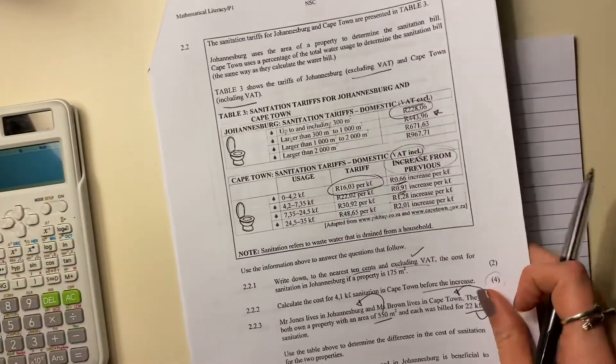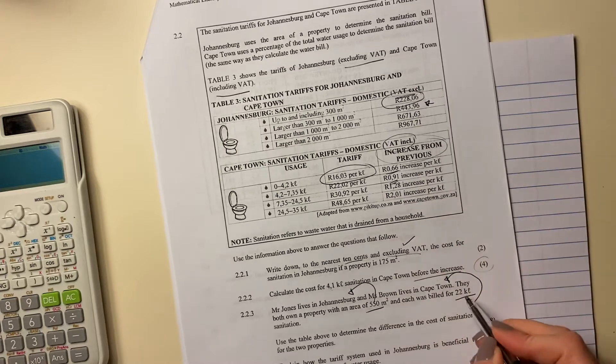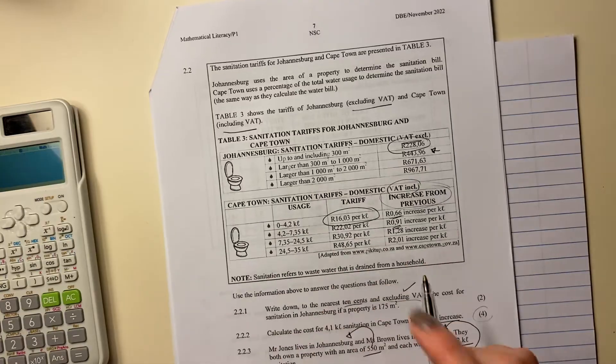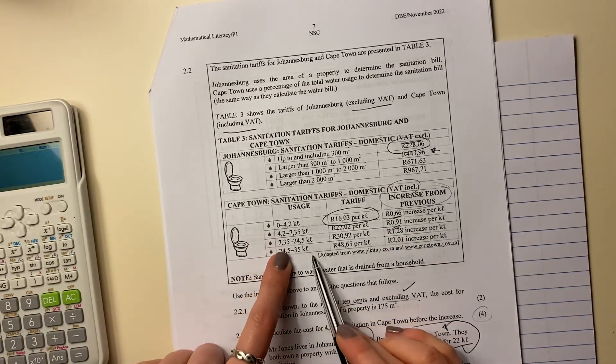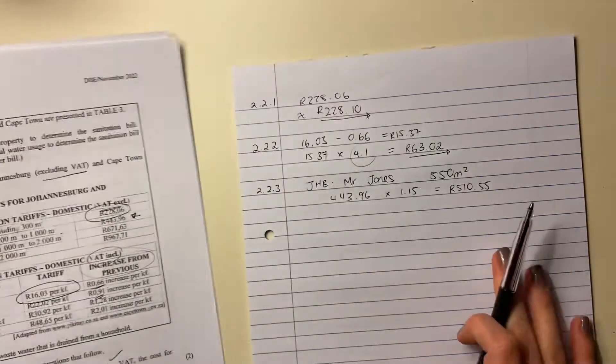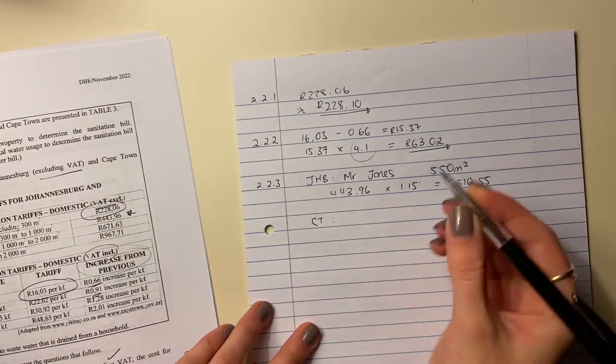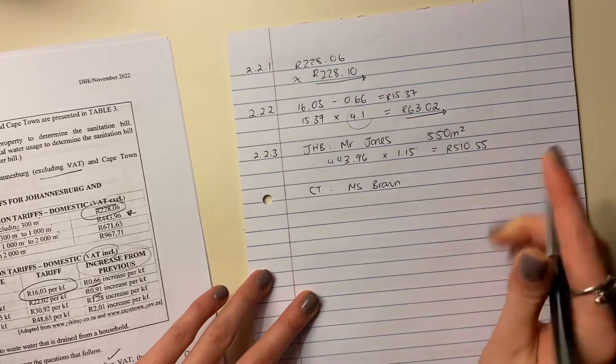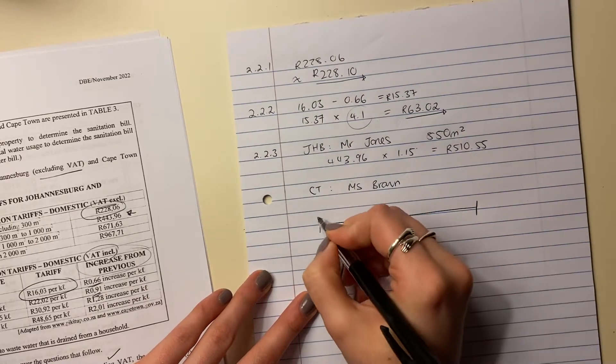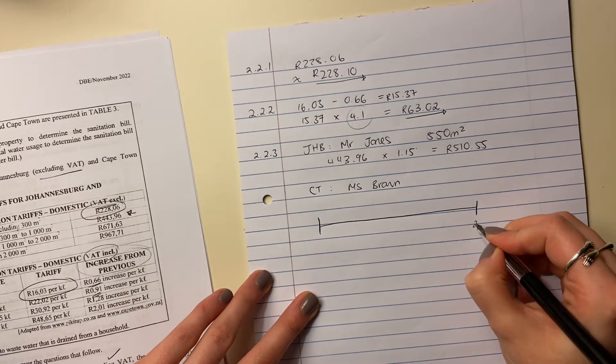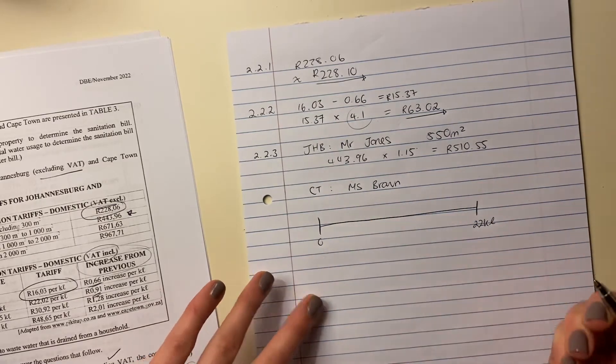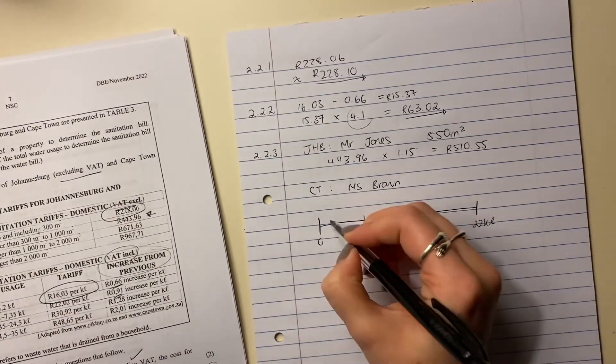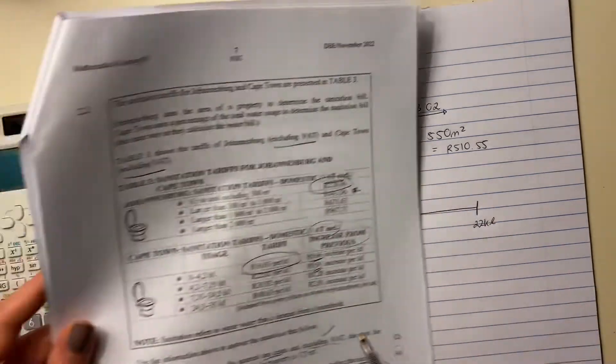Let's now do Ms. Brown. Ms. Brown is going to be a bit more difficult because she uses 22 kiloliters. Now, this is a tricky one because you see you charge different amounts for different intervals. So what I'm going to do is, and I've done this in previous videos, but I'm going to do it again just because people seem to really struggle with this concept. So I'm going to draw this little, it's kind of like a number line, but it's just basically to show you how we're splitting up these kiloliters.